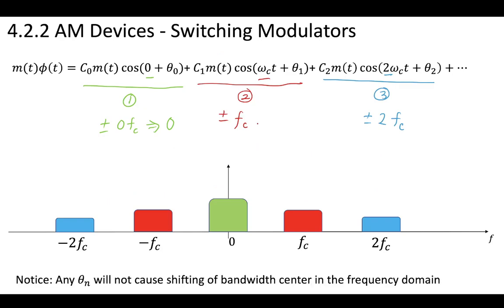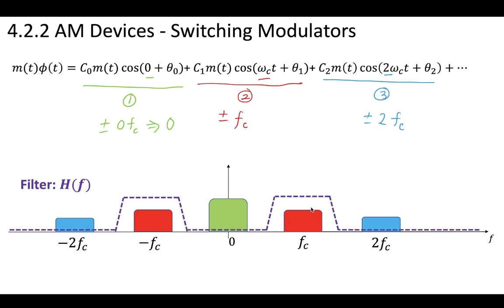Notice that no matter what this θn is — no matter what the phase is — it's actually not going to cause any shifting of the bandwidth center in the frequency domain. Now combine this with a concept we also learned previously: if we want to apply a filter, we could remove the portions of the message we don't want.